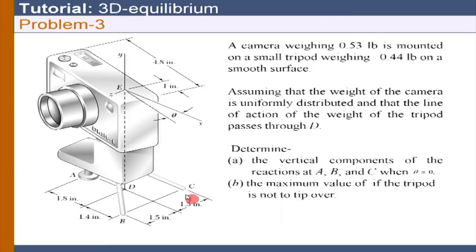For the second part, it is done in a very similar way — the only difference is that BY must be expressed in terms of theta and set to 0. BY greater than 0 is the no-tipping condition, and BY = 0 is the extreme case. That gives the value of theta for the tipping condition.